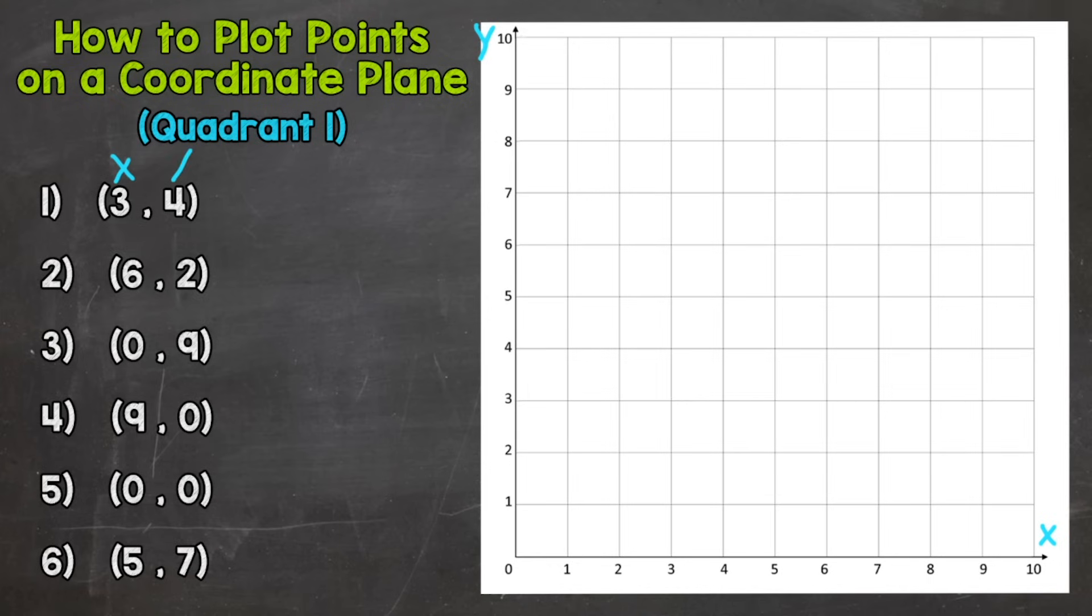So the first thing we want to do, x always comes first, which means side to side first. So (3, 4) means go over 3, up 4. So we would go over to 3 on our x-axis and then up 4, and where those intersect we're going to plot our point and I'm going to label it as well. That point is 3 over, 3 up 4.